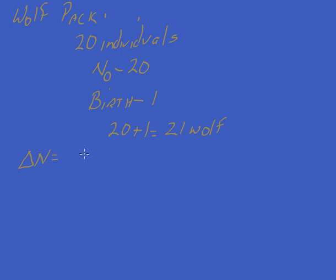So the change in N is the total number of individuals. We've got the total number of individuals, which is 21. We have the N-naught of 20. So if we take 21 minus 20, our change in N is 1.